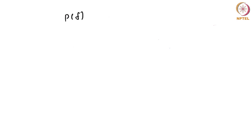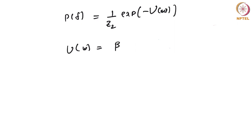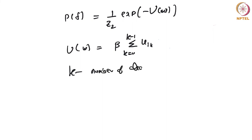How do we define P(F)? P(F) is 1 over some normalization constant times exponential of minus U(ω), where U(ω) = beta times the sum from k=0 to K−1 of U(ik), and K is the number of cliques. In the context of this problem, cliques are basically the neighborhood of every center pixel i.